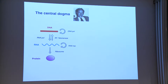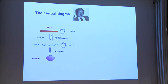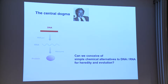The fact that these two polymers can exchange information — that information can be written from DNA into RNA and from RNA back into DNA — naturally leads to the question: why just two? Could there be other polymers with which DNA or possibly RNA could exchange information? We asked ourselves: if we could conceive of simple chemical alternatives to DNA and RNA, would these also be capable of heredity and evolution?